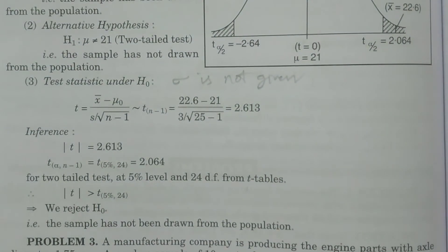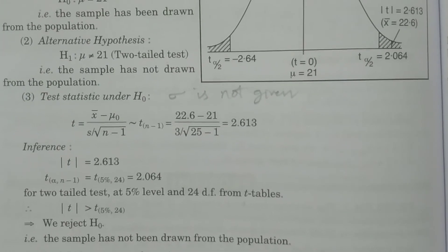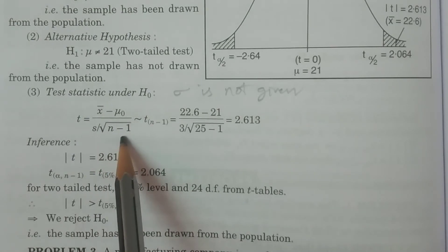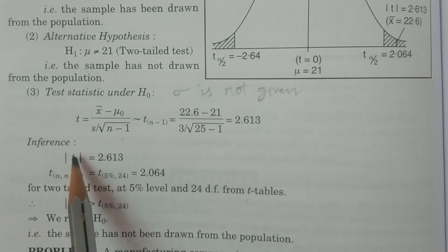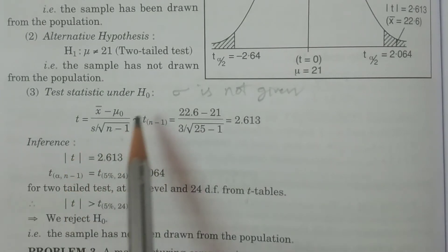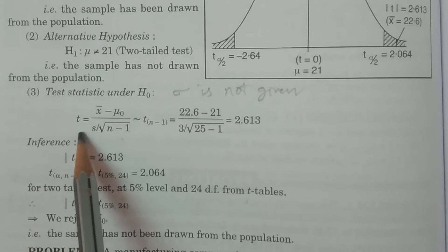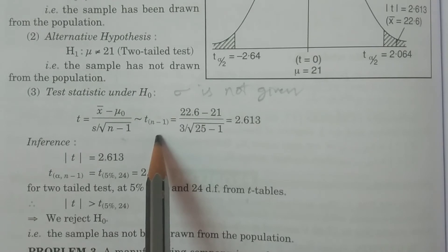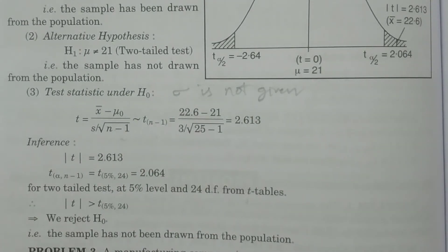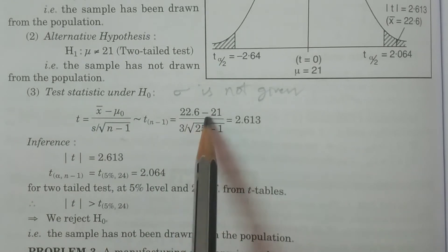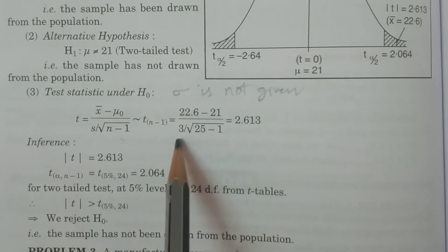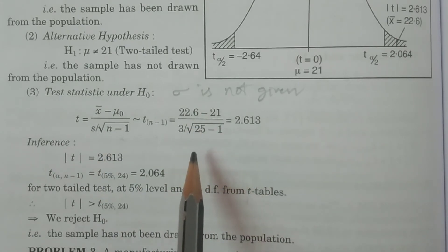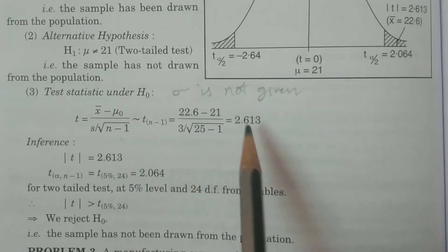If sigma is not given, we use the t-test statistic: t is equal to x bar minus mu naught, divided by S divided by square root of n minus 1, which follows t with n minus 1 degrees of freedom. Substituting values: x bar is 22.6 minus mu naught 21, divided by S = 3, divided by square root of 25 minus 1. Simplifying this value, you get approximately 2.613.